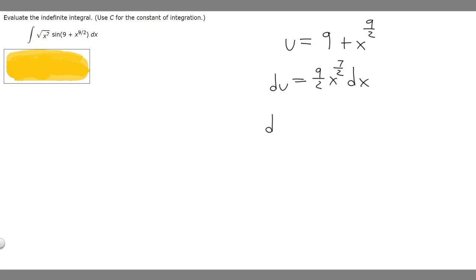And then next, what we got to do is solve for dx. So we can do that if we divide both sides by 9 over 2 times x to the 7 over 2, and the same thing on this side. We're going to get that dx equals du divided by 9 over 2 times x to the 7 over 2.